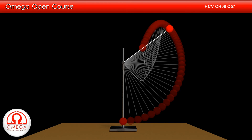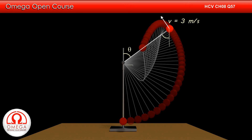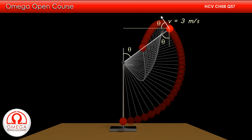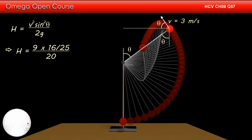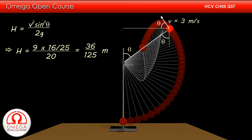Now let us look at the motion of the particle just after the string becomes slack. Its speed is 3 meters per second. From simple geometry, we can conclude that the velocity of the particle at this instant makes an angle theta with the horizontal. As the particle is now in projectile motion, we can find the maximum height raised by the particle using the formula: maximum height = V² sin²theta / 2g. Putting V = 3 m/s, sin theta = 4/5, and g = 10 m/s², we get H = 36/125.